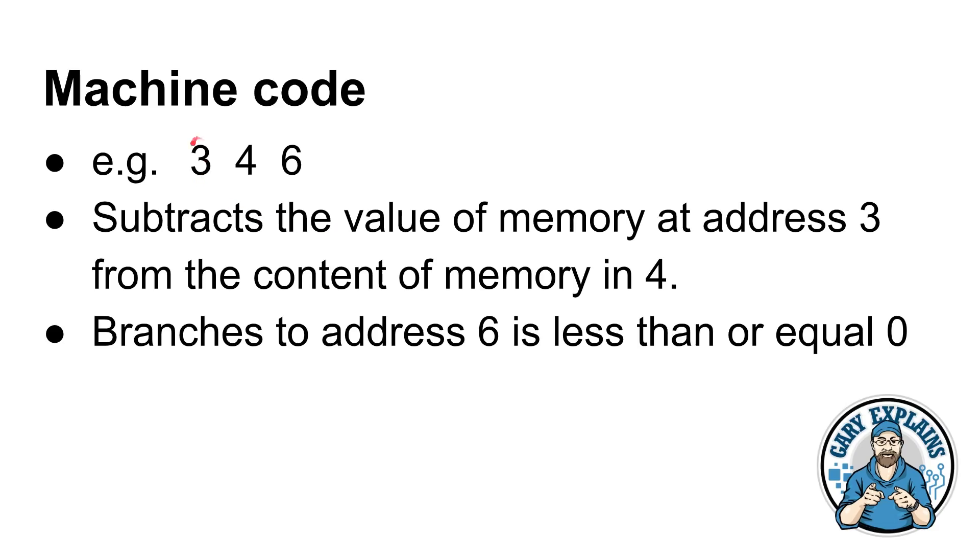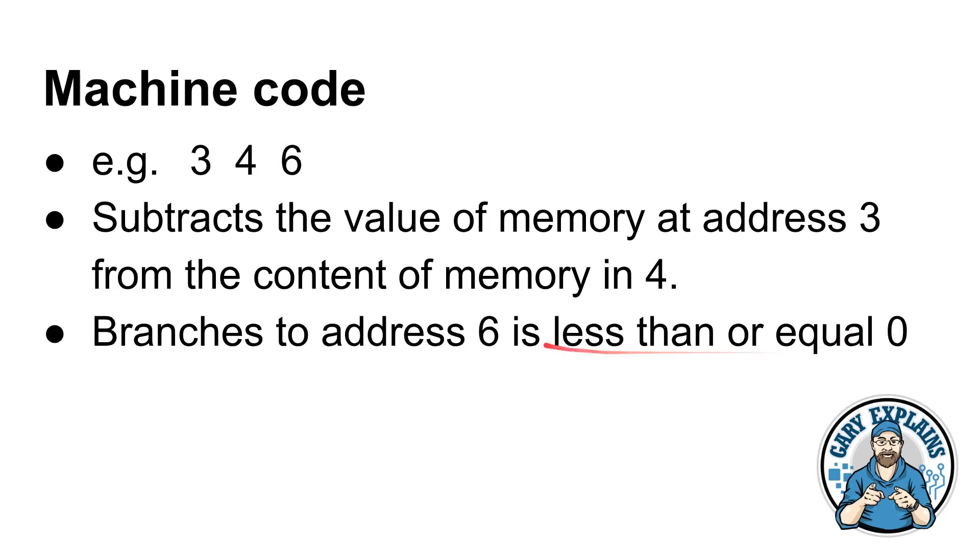If we look at some machine code here, if we just specify three, four, six, that subtracts the value of memory at address three from the contents of whatever is in address four. This isn't doing four minus three, it's doing whatever is in address four gets whatever is in address three subtracted from it. Works directly on memory, doesn't work on registers. Then it branches to address six, that's the six here, if the result is less than or equal to zero. Here's a little working example. At address zero, we've got 3, 4, 6, three bytes there. At address three we've got 7, 7, 7, and at address six we've got 3, 4, 0.